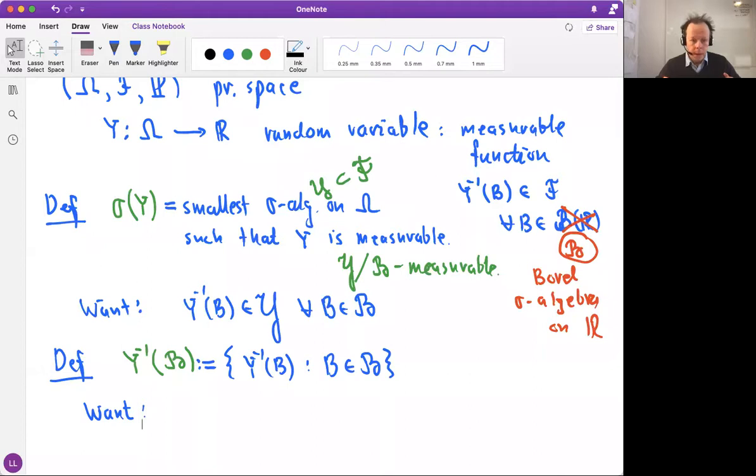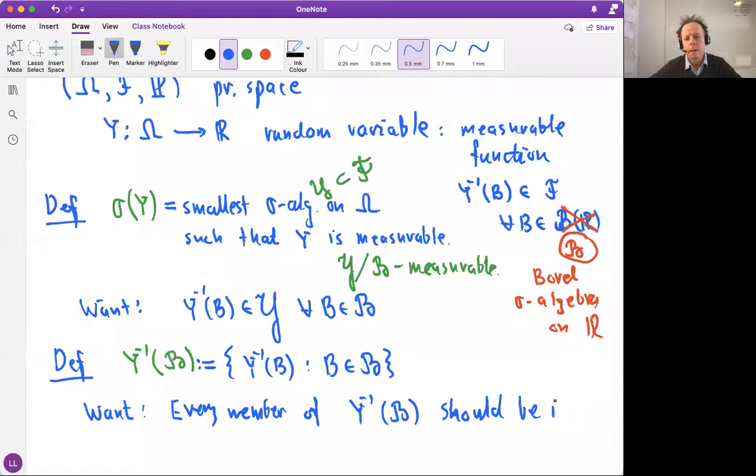And with this notation, what we want can be rephrased. Can you see how? We can rephrase what we want as saying that every member of this collection, Y minus one calligraphic B is a collection of sets. So every member of this should be in this collection Y that we are looking at. Yes, does it make sense? Okay, I assume it does. So if this is what we want, that is, we can rephrase this still. Well, it means that the collection of these sets, it's a collection of sets in omega, that should be a sub-collection of Y.